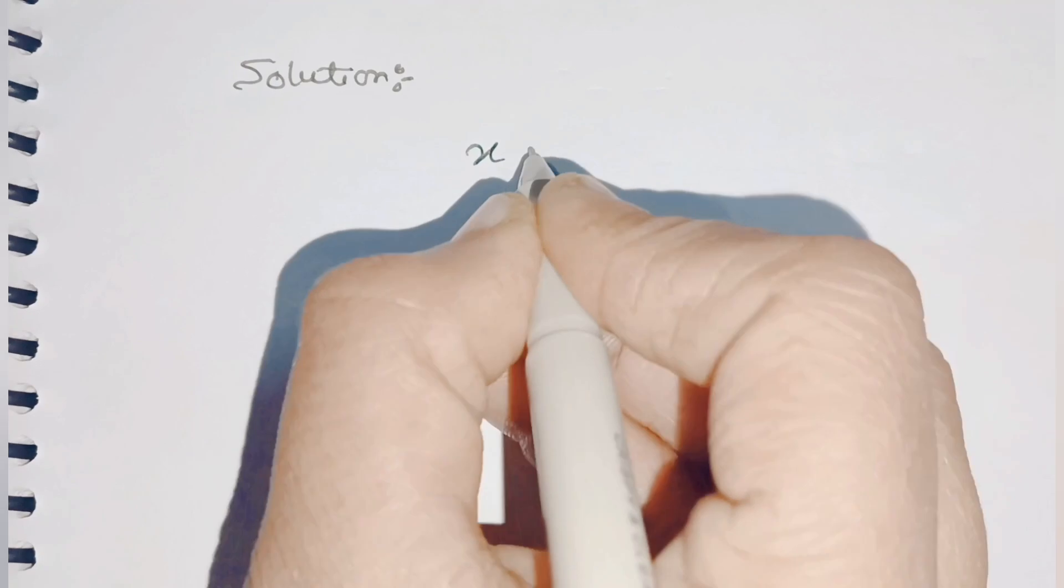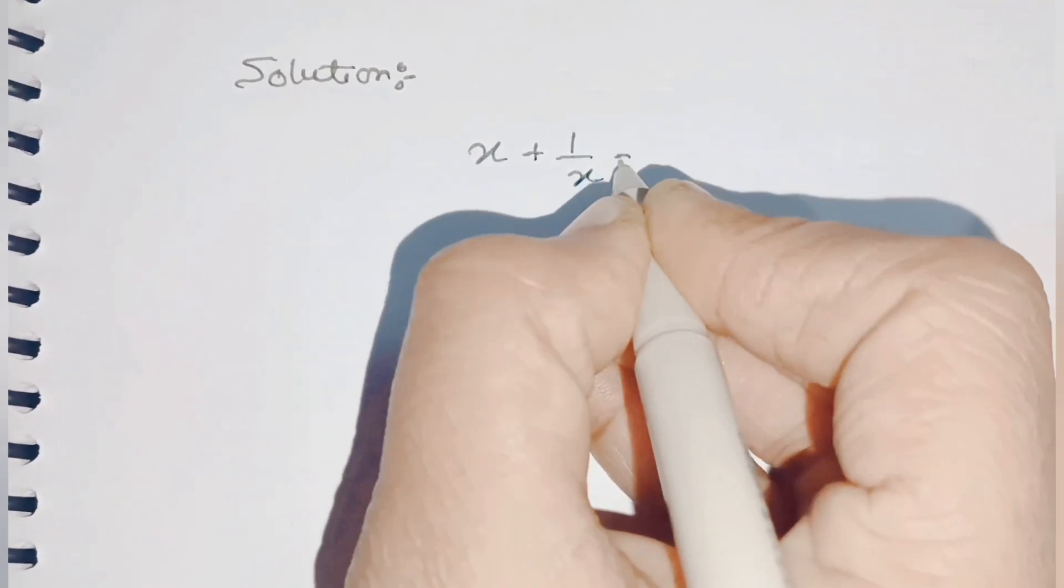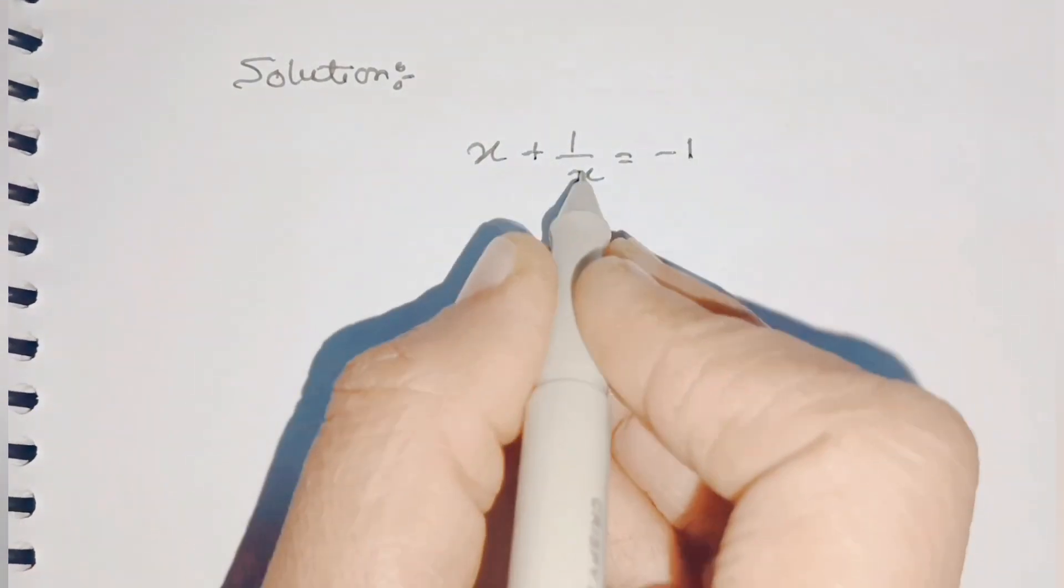Now come to the solution. First we'll write the given as it is: x + 1/x = -1.